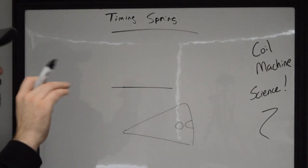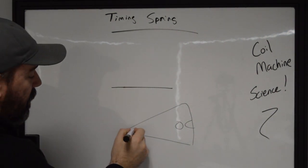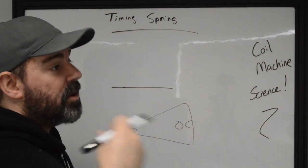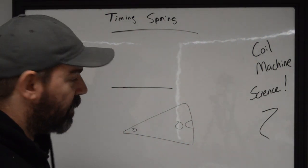The timing spring serves two purposes. One, it's the point of contact with our contact that is actually going to be closing the circuit, enabling that machine to re-energize and fire again. So that's really important to note.